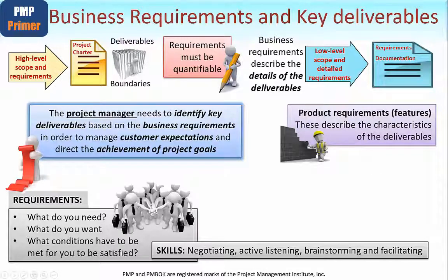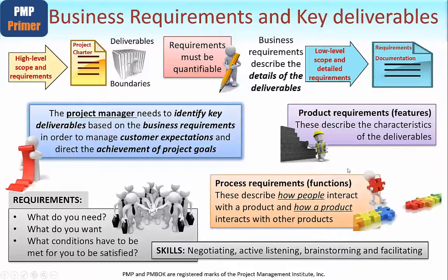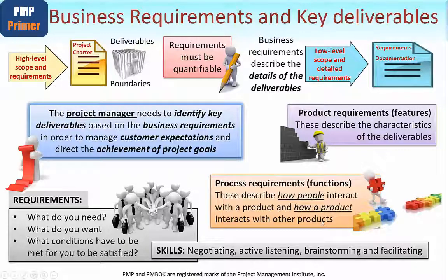When it comes to requirements, there are broadly two types. Product requirements describe features — specifically the characteristics of the deliverables that the project will create. Process requirements are about functions — they describe how people will interact with the product and how a product interacts with other products, either within the scope of the project or other products that already exist, for example in the operational area.